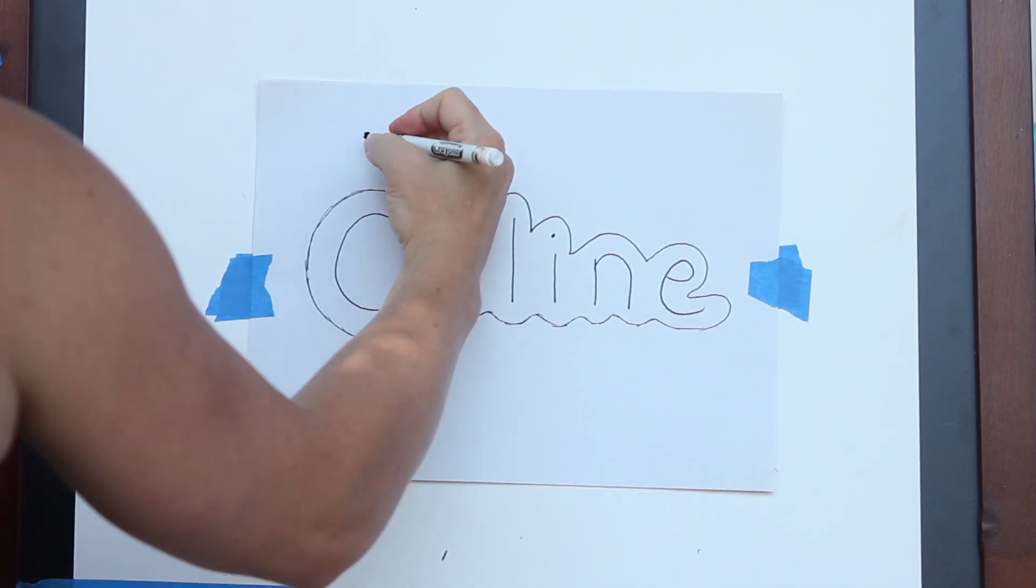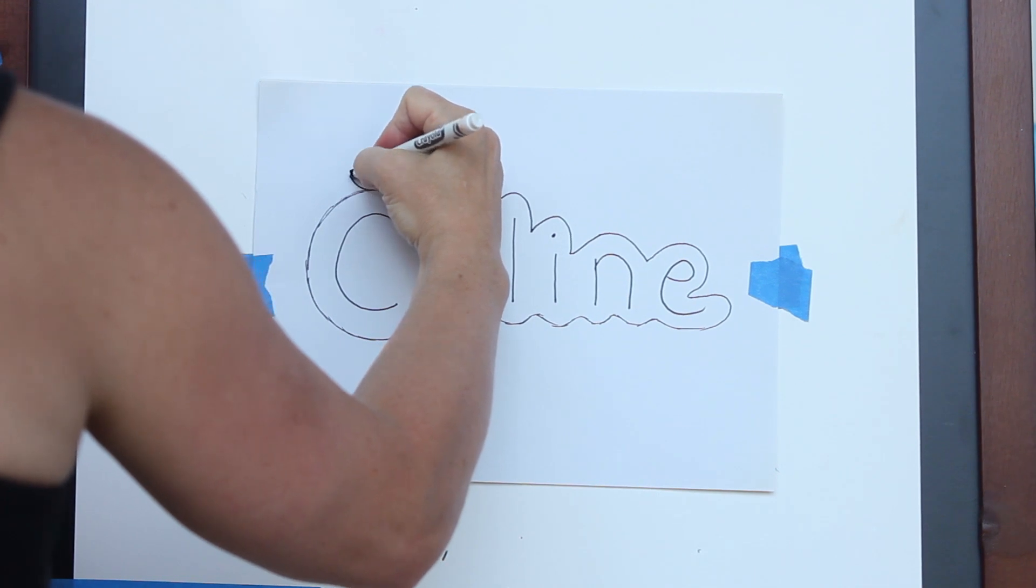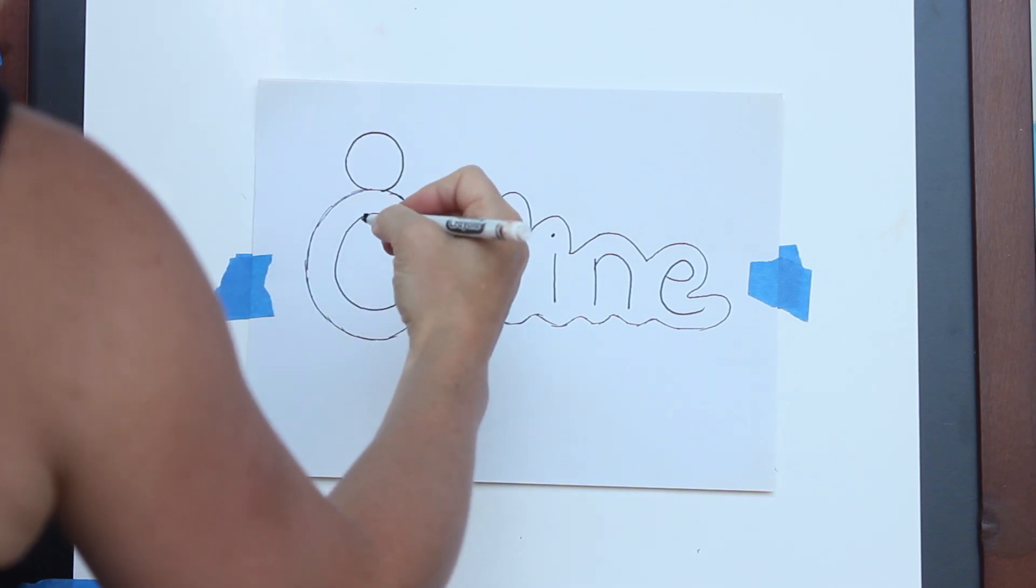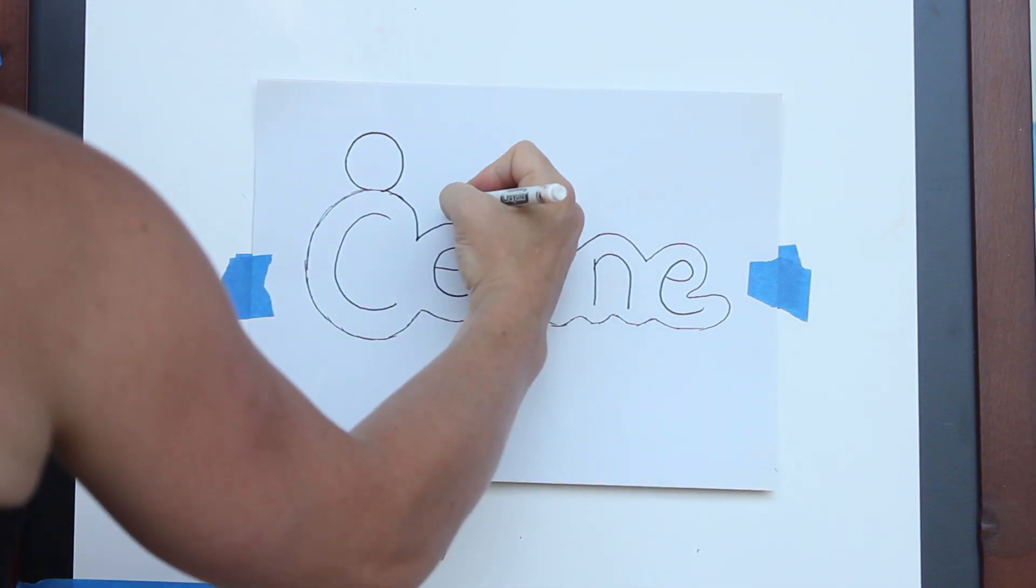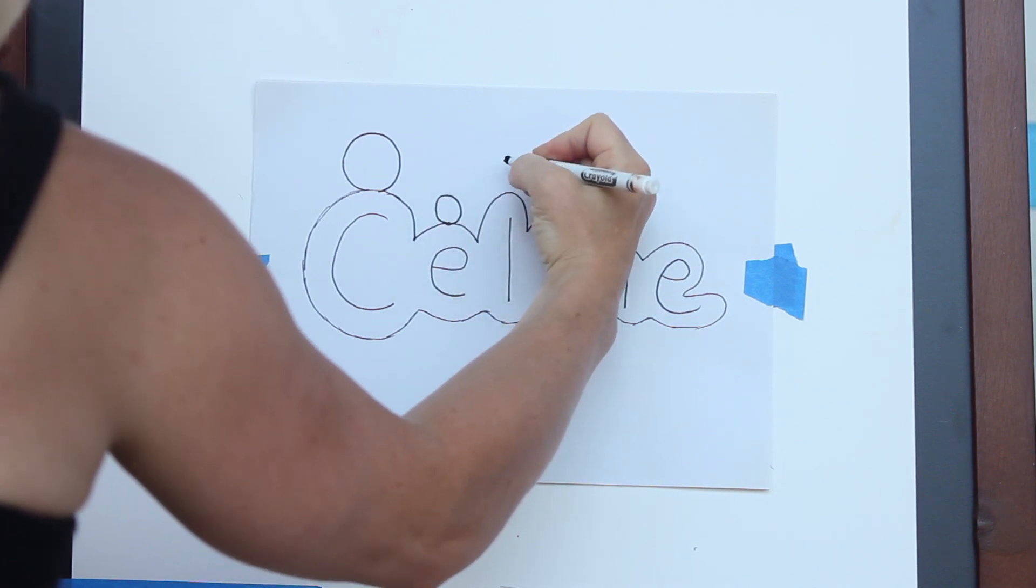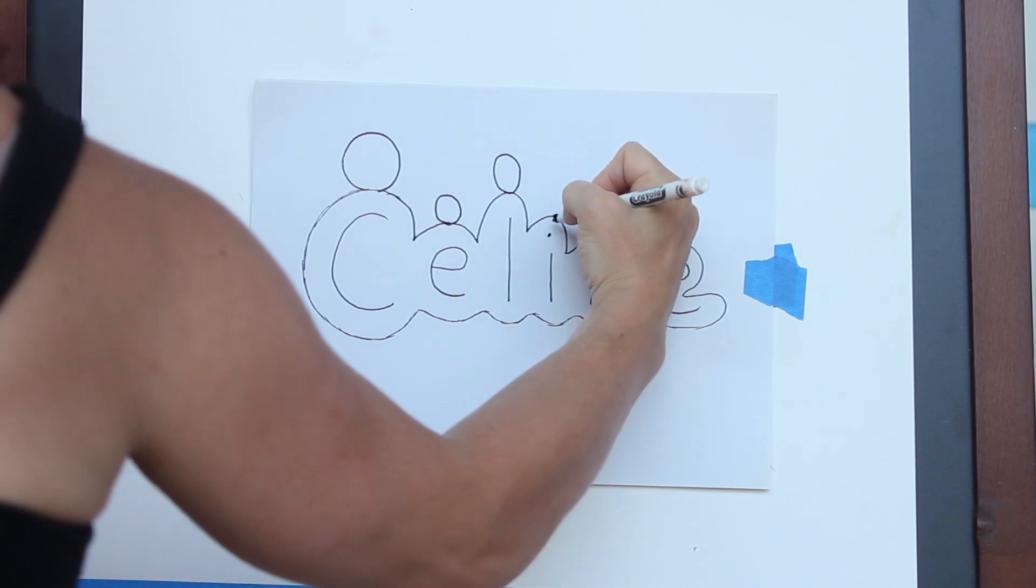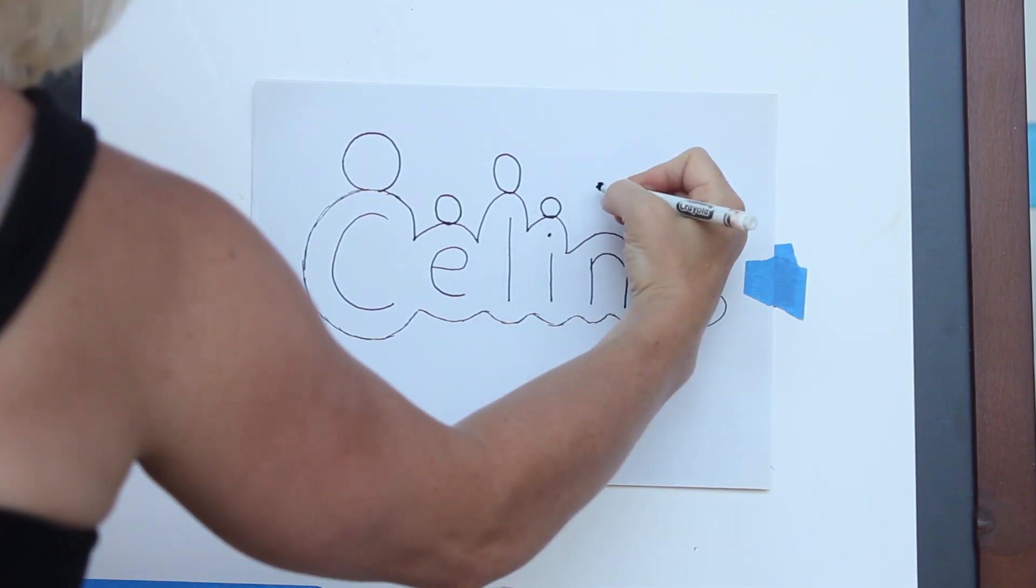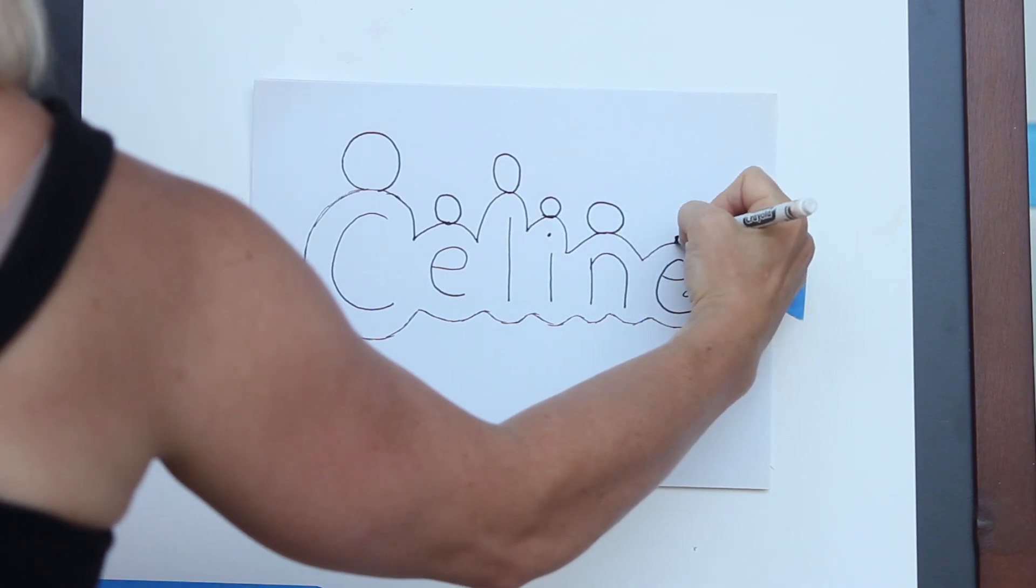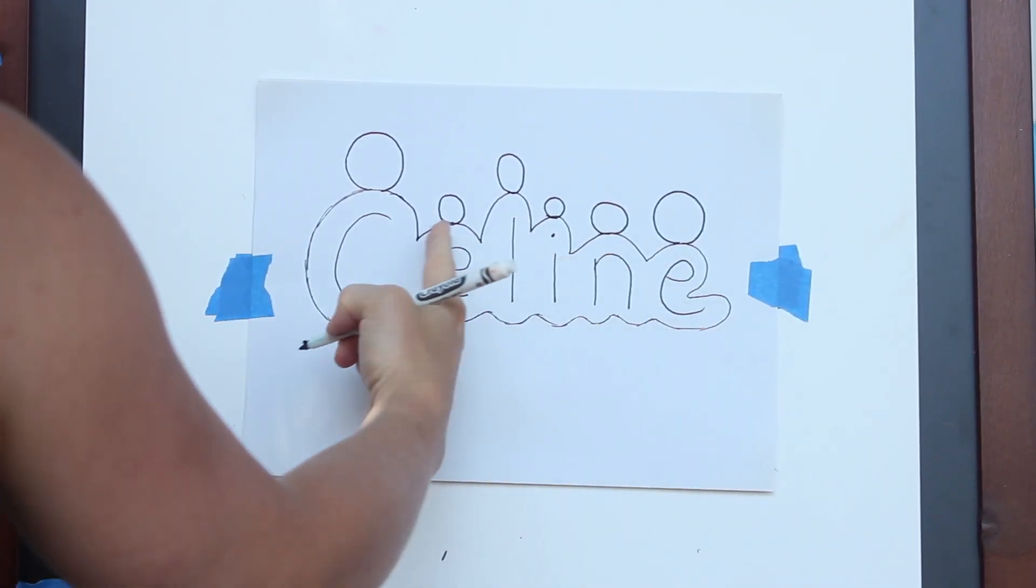Now I want you to create different size circles or ovals on top of each letter, and they could be different sizes. Notice that's a smaller one, this is a longer oval, this is a tiny circle, this is a wide circle, and this is a bigger circle I put here. But make sure it's connected.